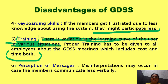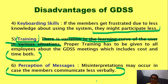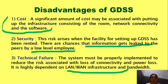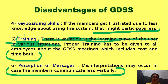Sixth is the perception of messages. Misinterpretations may occur in case members communicate less verbally. It might happen that some employees are not responding properly or are not able to clearly express or explain their views verbally, or share the broader views of whatever they want to say. In such situations, misinterpretations are possible — that is what we call perception of messages — where different people perceive a particular idea in a different way. So the disadvantages are: cost, security, technical failure, keyboarding skills, training, and perception of messages.